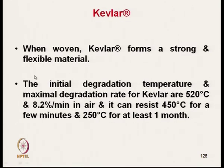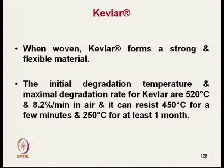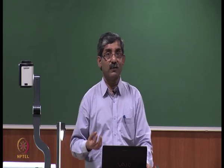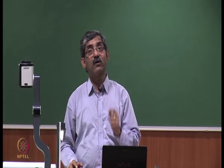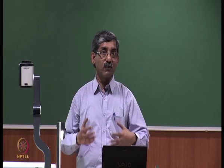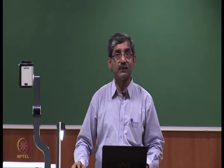When Kevlar is woven, it forms a strong and flexible material. The initial degradation temperature is at 520 degree Celsius — at a rate of 8.2 percent per minute in air — and it can resist 450 degree Celsius for a few minutes. Fabric made of Kevlar kept at high temperature as high as 250 degree Celsius can maintain its strength for at least one month, so Kevlar can be used for high temperature applications for longer times.